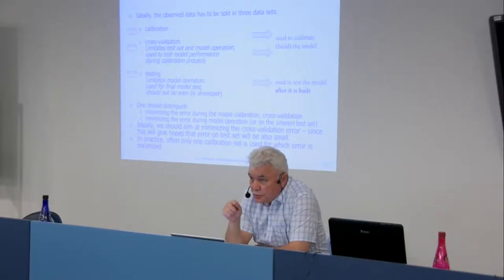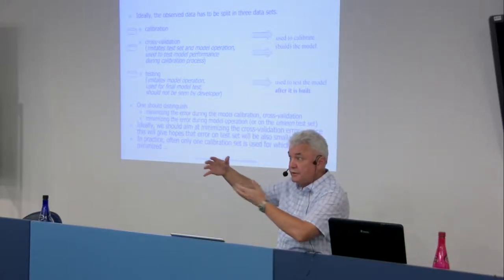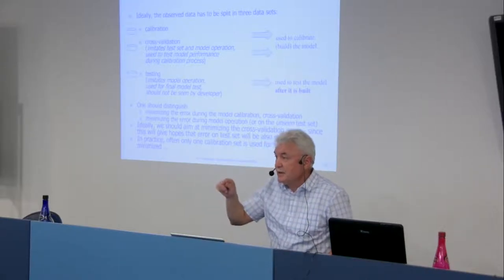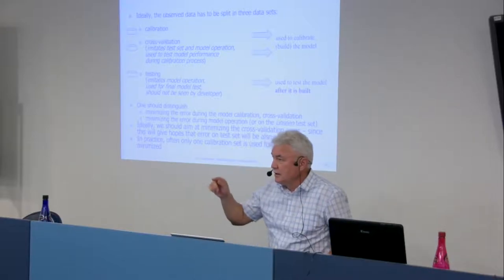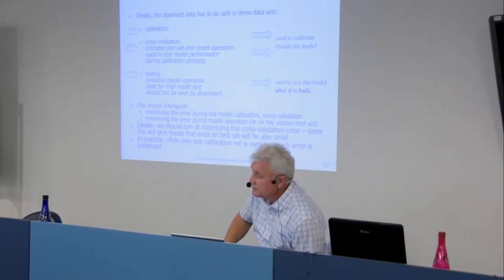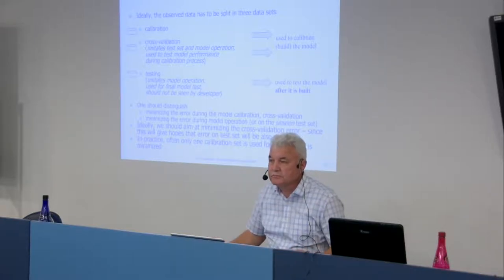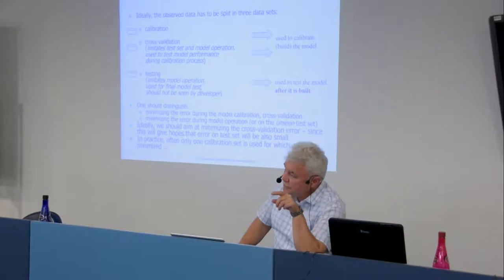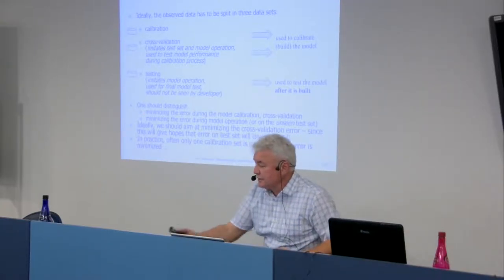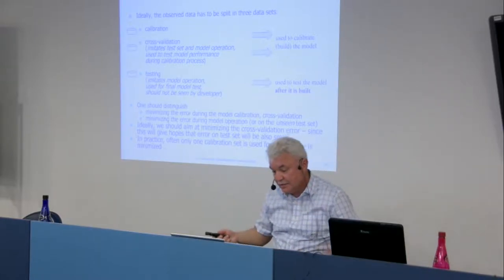Some managers like to do a 'crash test' — feeding unusual data into the model. There is a paper in HESS (Hydrology and Earth System Sciences) currently in review on crash testing. The point is that a crash test is unfair unless the crash data was also included during calibration; otherwise the model never learned to handle those peaks. When you test the model it should be on data the model hasn't seen, but not data that is too different.